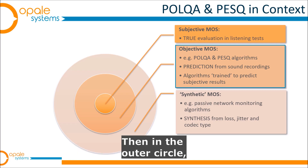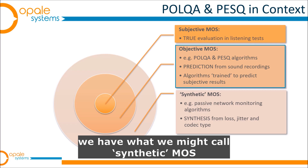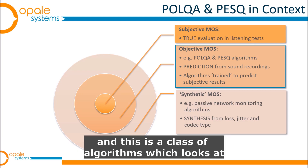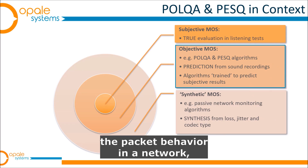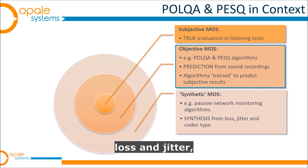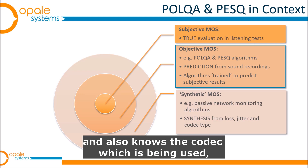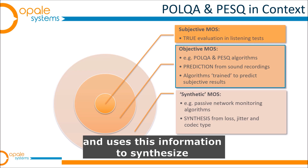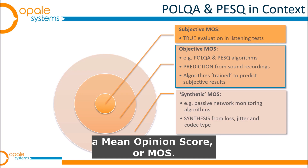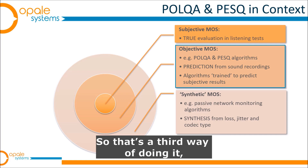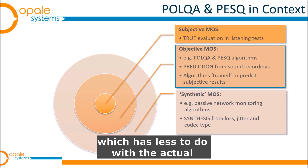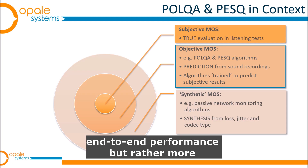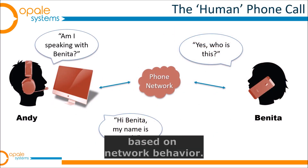In the outer circle we have what we might call synthetic MOS. This is a class of algorithms which looks at packet behavior in a network — loss and jitter — and also knows the codec being used, and uses this information to synthesize a Mean Opinion Score. So that's the third way of doing it, which has less to do with actual end-to-end performance and more to do with estimating performance based on network behavior.